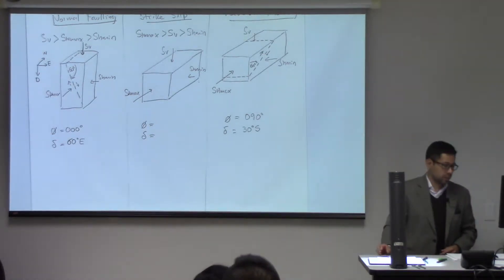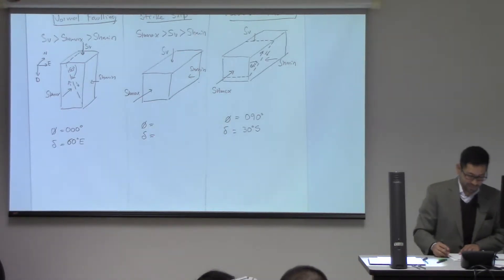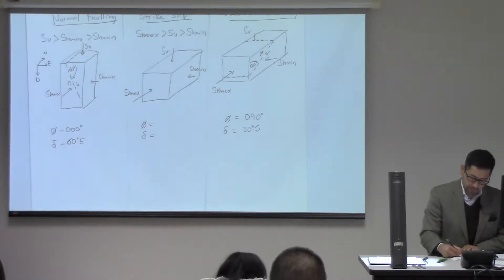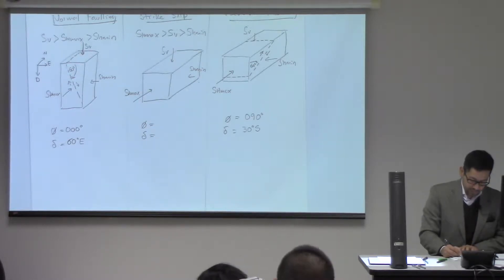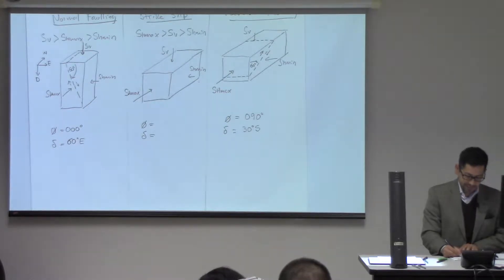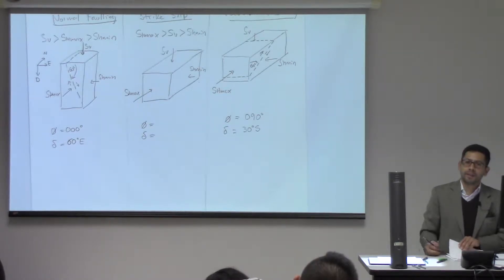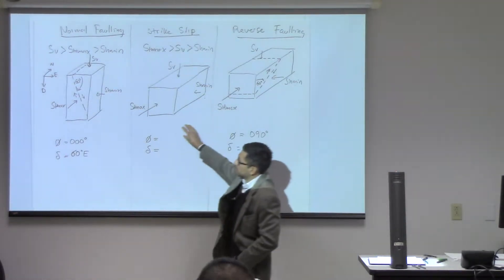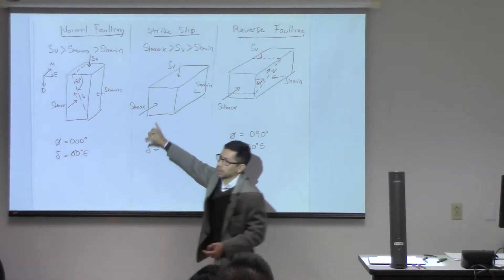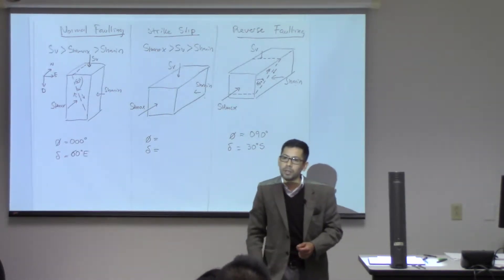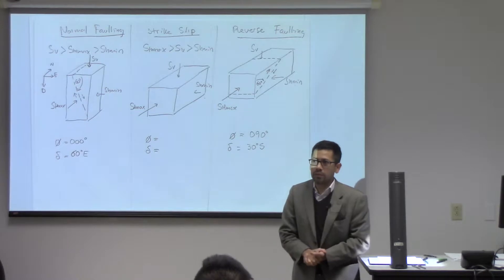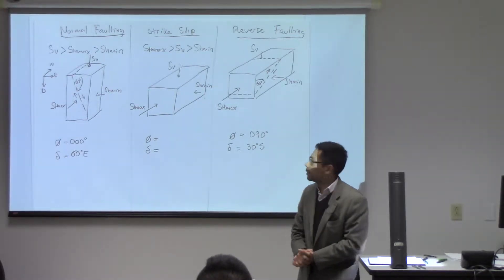What is the strike going to be? It's exactly the same as the cases before. Notice that I have drawn these blocks with the longer direction always in the direction of the maximum principal stress — to look closer to what you did in the laboratory, where the cylindrical samples were always loaded in the long direction. So the dip is 90 degrees, and then what was the strike?